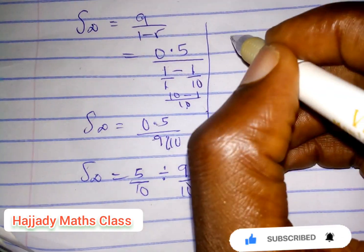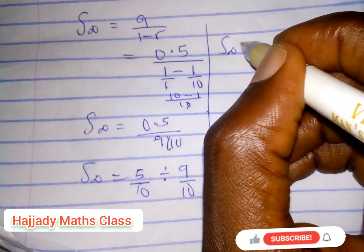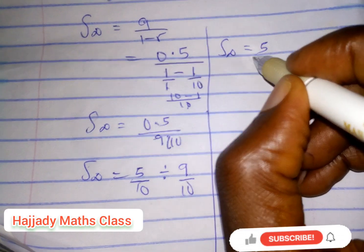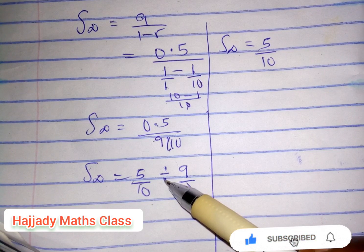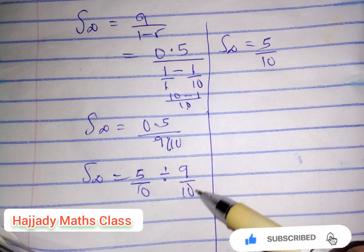We find the reciprocal of this, so we have times 10 over 9. Our 10s cancel out, and finally our sum to infinity is 5 over 9.